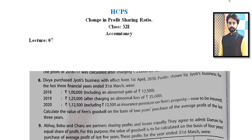For 2020, profit given is 1,12,500 excluding insurance premium. Insurance premium is compulsory for any firm — it is mandatory to give safety to employees and assets — so it is a regular expense. For the calculation of actual profit, this expense is subtracted. So: first year minus, second year plus, third year minus. After getting actual profits, calculate average by totalling and dividing by 3, then calculate goodwill. The solution is not shown; you need to complete it yourself.